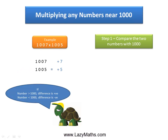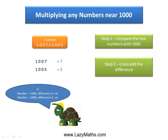The next step is to cross add these differences. So we take 1007 plus 5, which gives us 1012, or we can also do 1005 plus 7. Either way, we get 1012 as the answer.